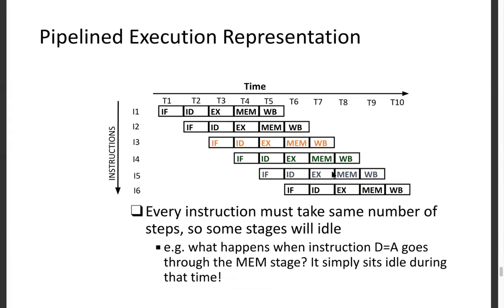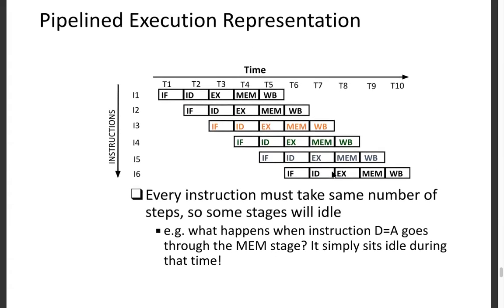The standard five-stage pipeline is IF, ID, EX, MEM, and WB. It can happen that depending on the instruction type, a given stage may not be invoked. For example, 'D = A' does not need the memory stage. That instruction would stop before the memory stage, which sits idle for that one cycle. So whether a stage is active really depends on what kind of instructions are in the program.